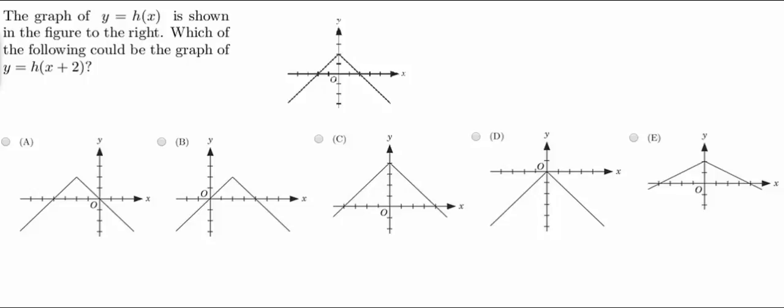The question itself says the graph of y equals h of x is shown in the figure to the right. Which of the following could be the graph of y equals h of x plus 2? This problem goes back to Algebra 2 when you learn how to transition graphs. If you remember, any time you add 2 and it's inside the parentheses with x, that is going to be a horizontal shift and it's going to be in the negative 2 direction.